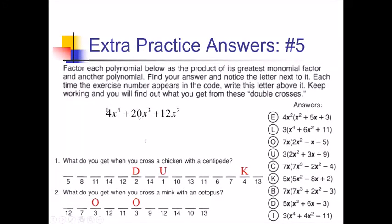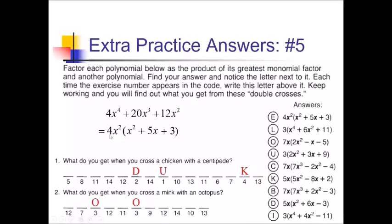For problem 5, between the 4, 20, and 12, those are all divisible by 4. Looking at the variables, they all have at least x to the second power, so I can take out x squared along with my 4. Dividing by 4x squared: 4x to the fourth gives x squared; 20x cubed gives 5x; and 12x squared gives plus 3. So I've got 4x squared on the outside — that's letter E, going under spot number 5. No other 5s, so on we go.